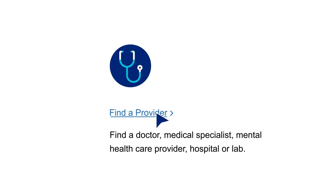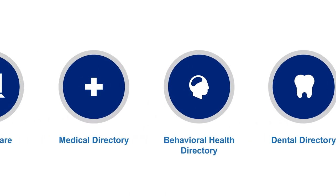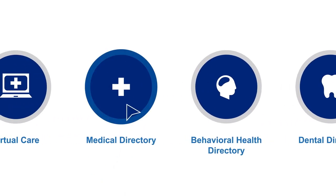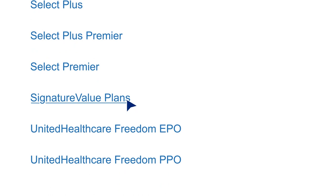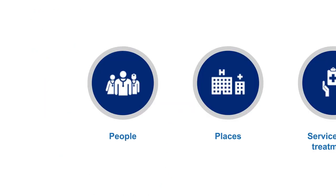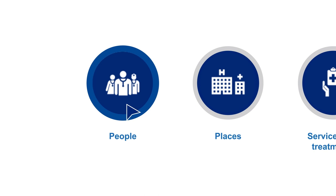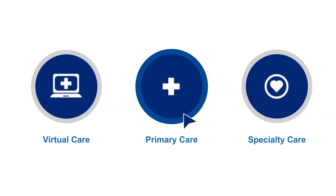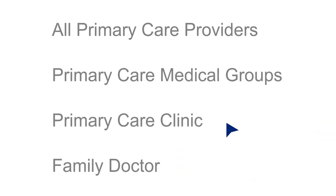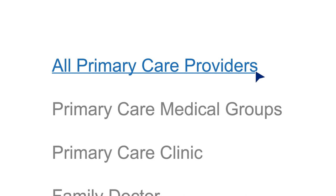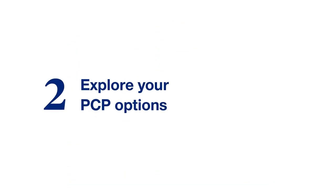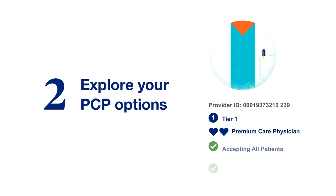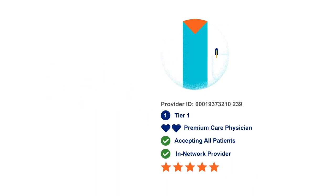From there, you'll see additional steps where you may need to select your health plan and set your location to find PCPs near you. Then you'll choose People, Primary Care, and All Primary Care Providers. Now let's talk about exploring your PCP options, because we've got a few solid tips designed to help you choose the PCP that best fits your needs.